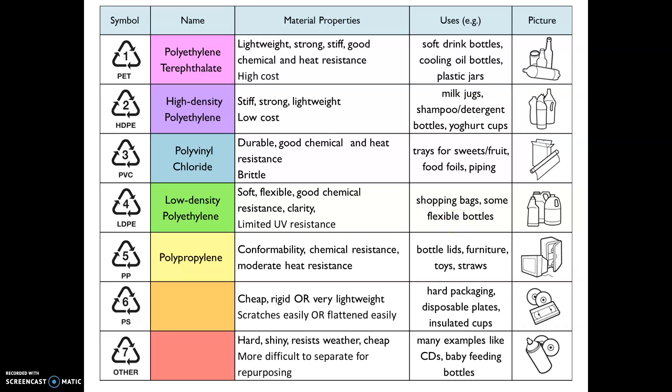PS stands for polystyrene. We have two types: high impact polystyrene, also known as HIPS, and expanded polystyrene. They are very, very different even though they're both polystyrene. HIPS is cheap and rigid, whereas expanded polystyrene is literally injected with air — very, very lightweight — used for things like insulated coffee cups. Then last we have number seven, which stands for 'other'. That includes many plastics, but we need to be familiar with acrylic, nylon, and polycarbonate — acrylic and polycarbonate used for things like car headlights and CDs.